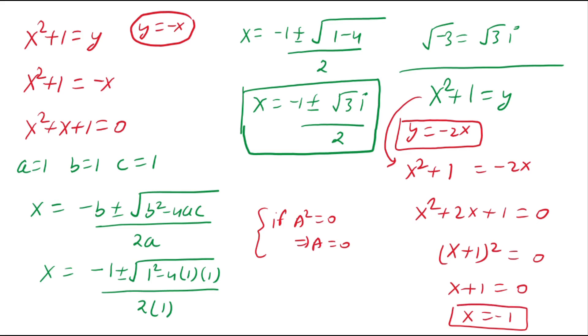We have three solutions in total: two imaginary solutions and one real solution x = -1. This is our final answer. I hope you enjoyed this video — see you in the next one, take care and bye bye.